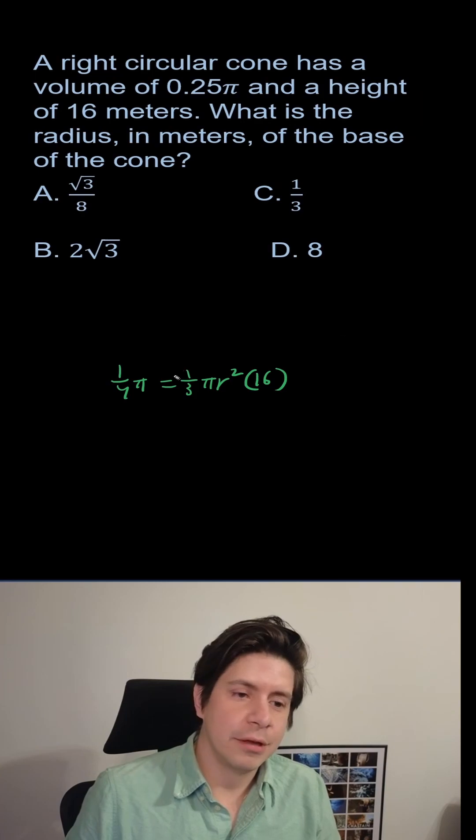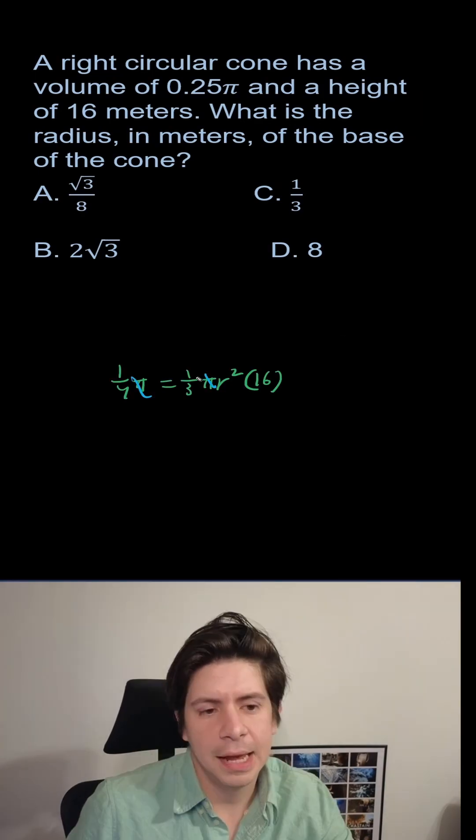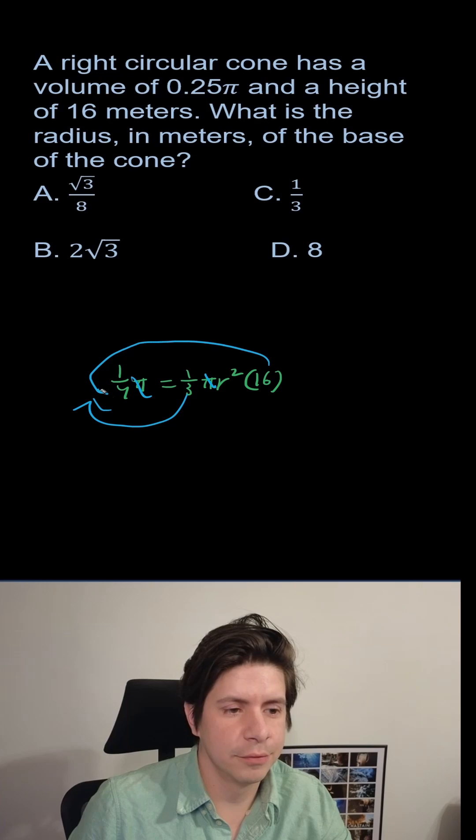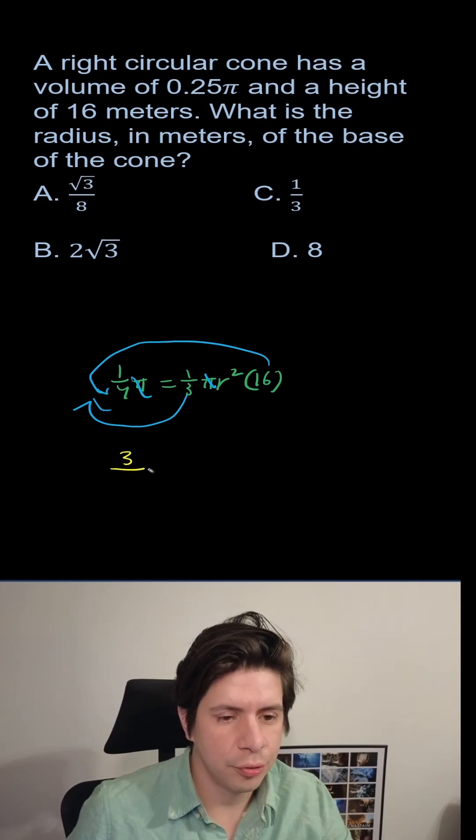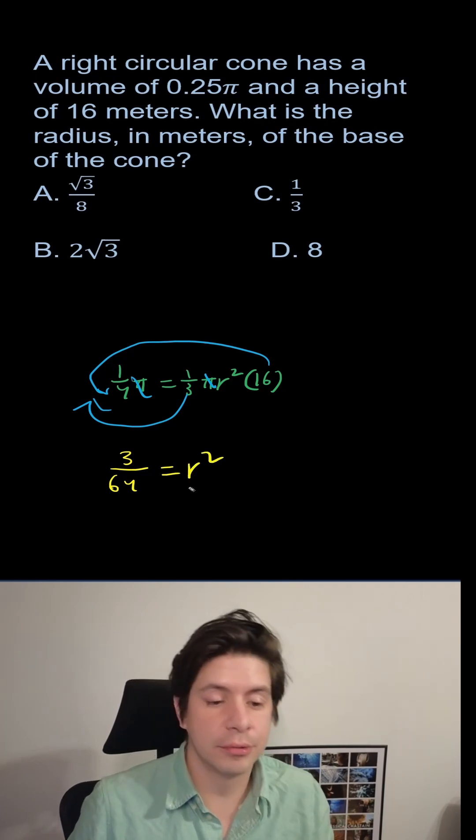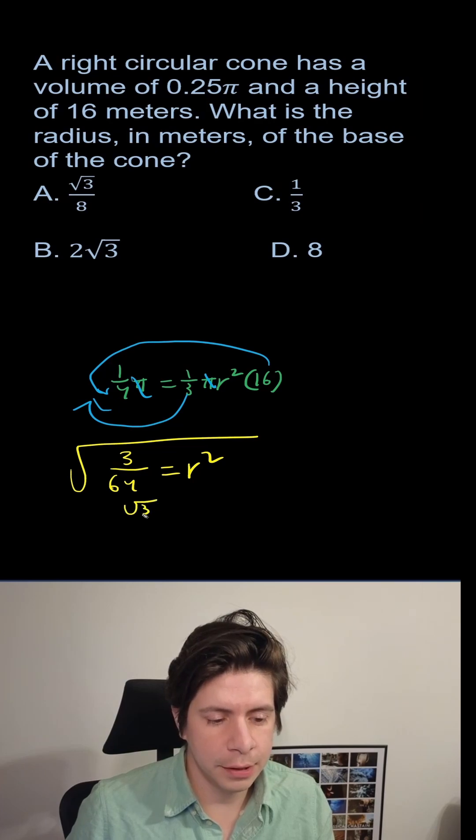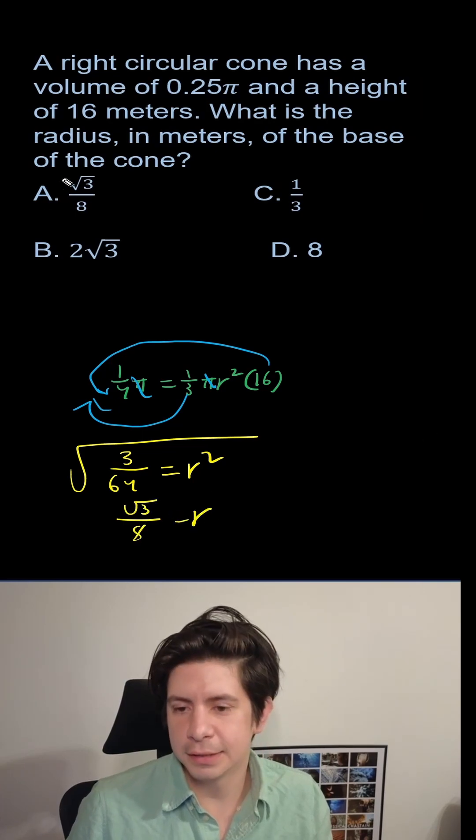So let's move everything over. The π's are gonna cancel, and then this will get moved over, and this will get moved over. So our new equation is going to be 3/64 equals r². So now we're just gonna square root both sides, and we're gonna get √3/8 equals r, and that is a.